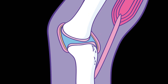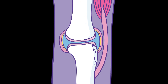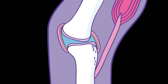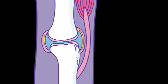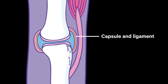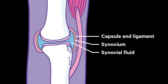Joints allow bones to move freely without letting them move too far. A joint is held together by a capsule and ligaments. There is a soft inner lining to the joint called the synovium. A thick fluid is made by the synovium which protects the joint and helps bones move freely.